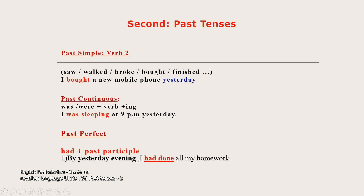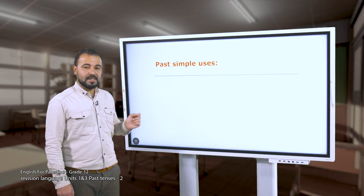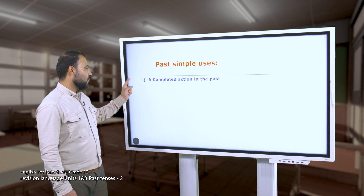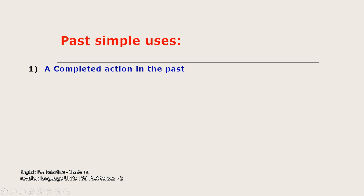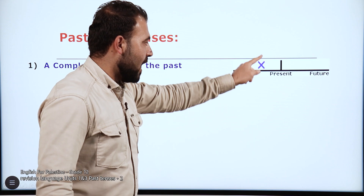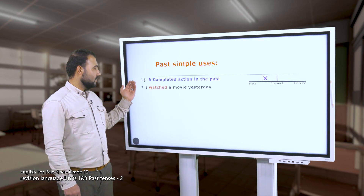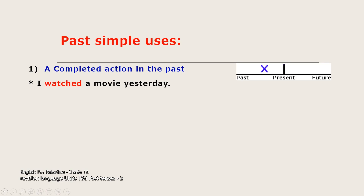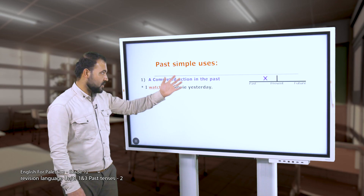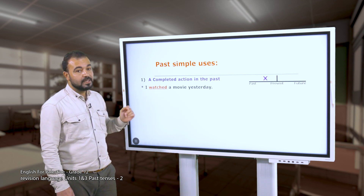Let's see some uses of the past simple tense. Use number one: to talk about a completed action in the past. In the timeline, the action happened and is totally completed. Example: 'I watched a movie yesterday.' 'Yesterday' is a keyword related to the past simple tense. The action is totally completed, so we use the verb in the past tense form.